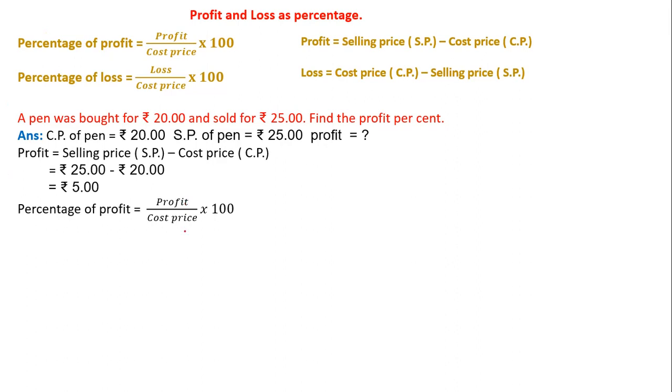Substitute the given values: profit 5, cost price rupees 20 into 100. To calculate the profit percentage, first we need to multiply numerator into numerator, denominator into denominator. Numerator we have 5 into 100, after multiplying I will get it as 500. Denominator I have only 20, so I wrote 20 as it is. Now I am dividing 500 by 20.